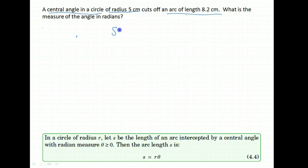Well, we know the formula for arc length is the arc length is equal to the radius of the circle times the angle measure of the central angle in radians.